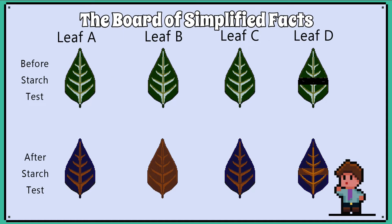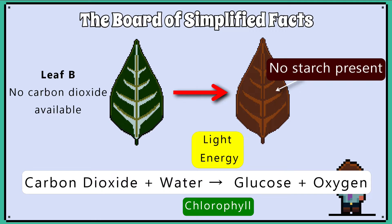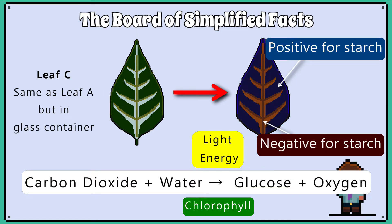We get the following results, showing the before and after the starch test for each leaf. Leaf A shows that the green parts of the leaf have starch, but the white parts do not. This is because the white parts of the leaf have no chlorophyll and therefore can't photosynthesise and make glucose, and therefore make starch. So, this proves chlorophyll is needed for photosynthesis. Leaf B shows no positive results for starch because carbon dioxide is required for photosynthesis to occur — no carbon dioxide, no photosynthesis, no glucose, therefore no starch. Leaf C is the same as leaf A, as this just again showed that the volume of atmosphere exposed to plant B was not affecting photosynthesis.